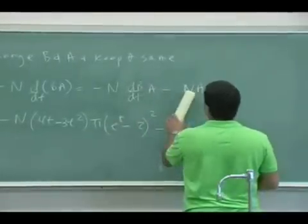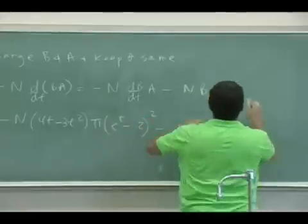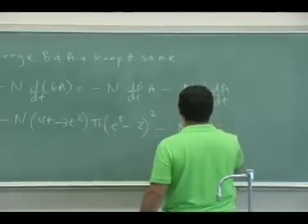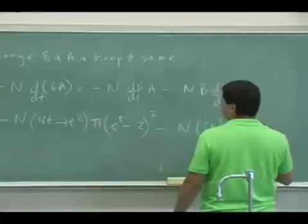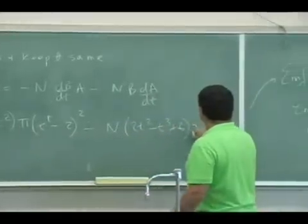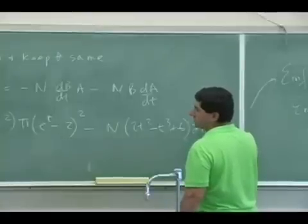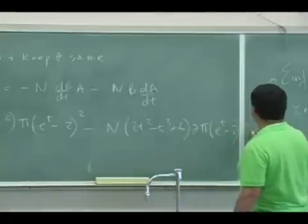Oh, you know what? I did the same thing. Minus N and B dA/dt, right? So then I would put N times B times dA/dt, which now I can do the 2 pi r and dr/dt would be e to the t.